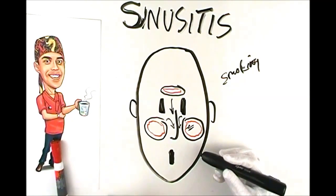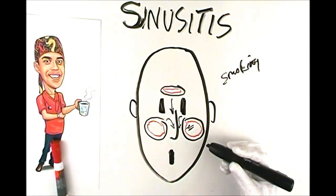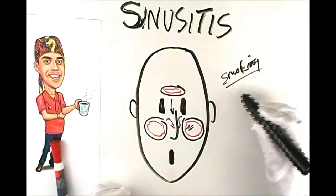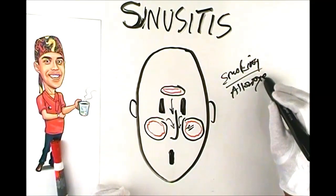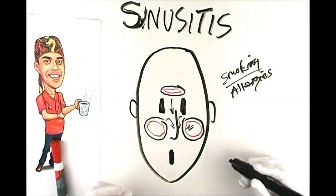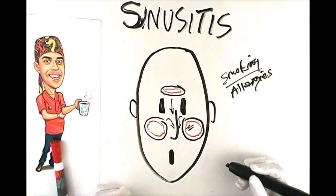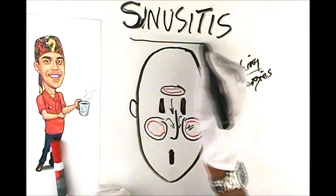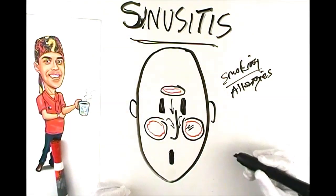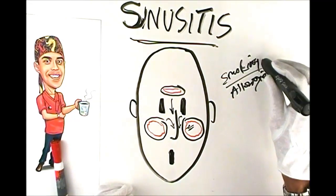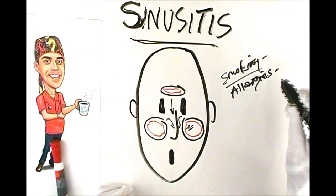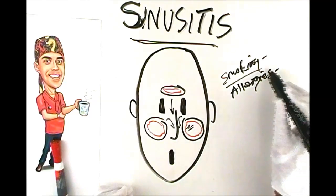That mucus then drips down the back of your throat, and that can cause a lot of tickling of your throat, throat soreness, and chronic cough. Another thing that can also do the same thing is allergies — exposure to things like dust and mold in the air that you're breathing in. Sinusitis is a little bit different in the sense that when we talk about sinusitis, we're not usually talking about sinusitis caused by irritation from smoking or allergies — that would be called allergic sinusitis.